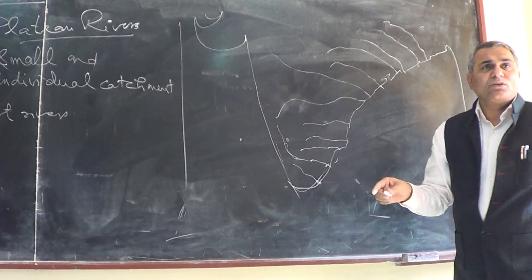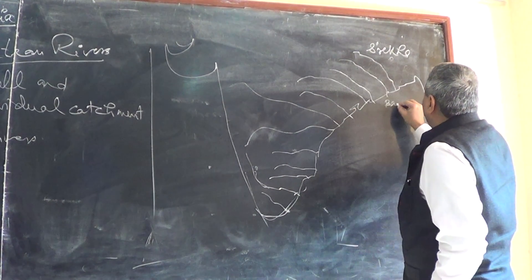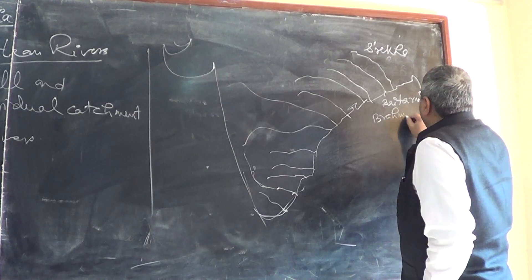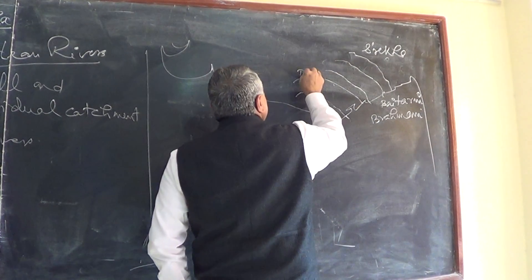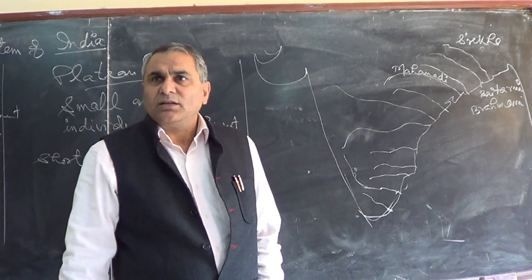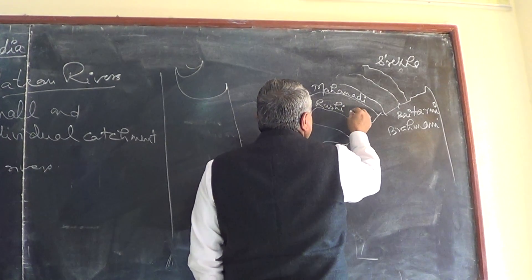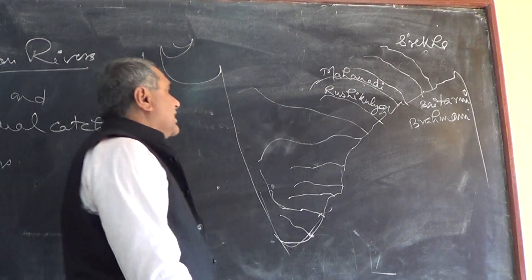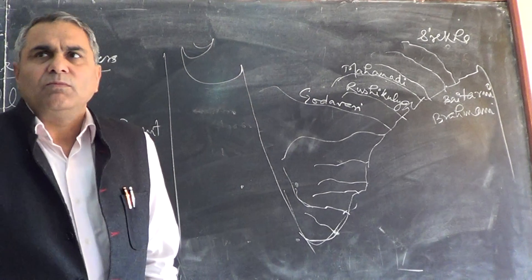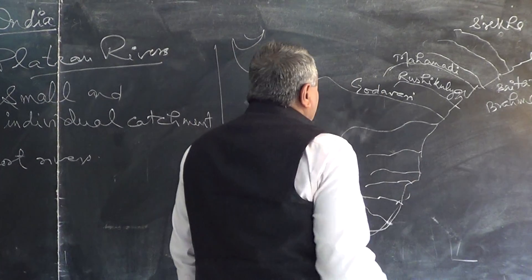This river is Subarnarekha. This is the Vaitarani river in Odisha, and this is the Brahmini river. Next is the Mahanadi, which originates from the Maikal Plateau in the Bastar region — the place is called Kanker. Then this is Rushikulya. Godavari originates from near Nasik, from a place called Tryambakeshwar, and this is the Krishna river.